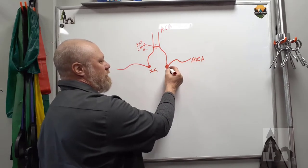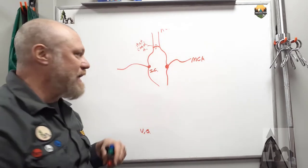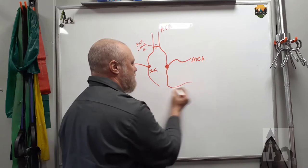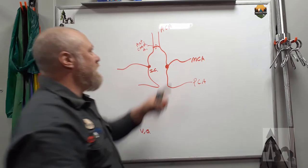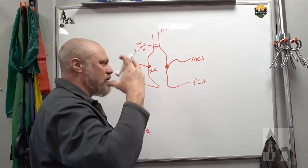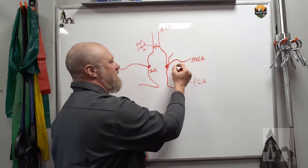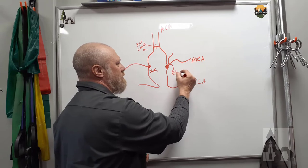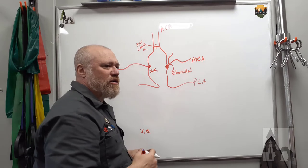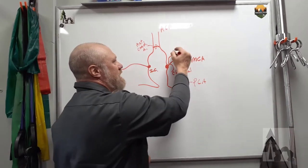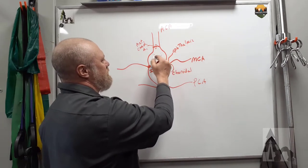The internal carotid will give off a posterior communicating artery, which will head toward the rear of the brain. You're going to have a posterior cerebral artery. So you have an anterior, a posterior, and a middle cerebral artery — they're going to supply the lobes of the cerebrum. There's also going to be an ophthalmic artery and a choroidal artery. The choroidal artery helps with the choroid plexus and the ventricular system, and there are a few perforating arteries in here as well.